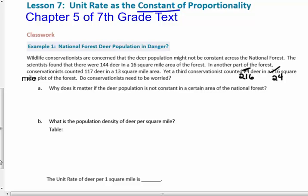So wildlife conservationists are concerned about the deer population that might not be constant across the national forests. The scientists found that there were 144 deer that lived in a 16-square-mile area of the forest. In another part of the forest, the conservationists counted 117 deer in a 13-square-mile area. Yet a third conservationist counted 216 deer in a 24-square-mile plot of the forest. Do the conservationists need to be worried? Why does it matter if the deer population is not constant in a certain area of the national forest?